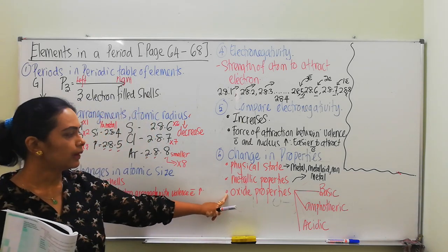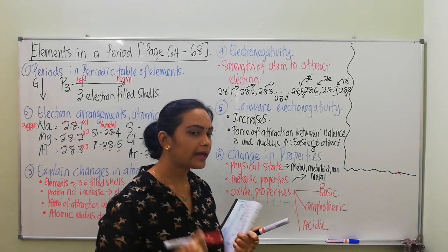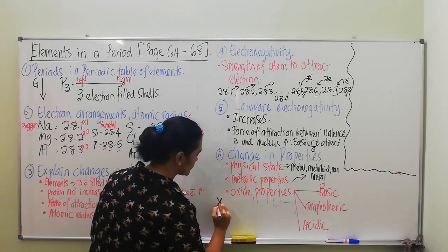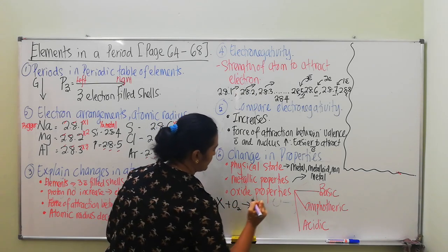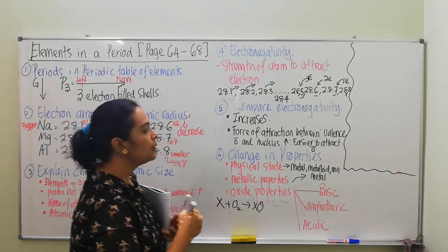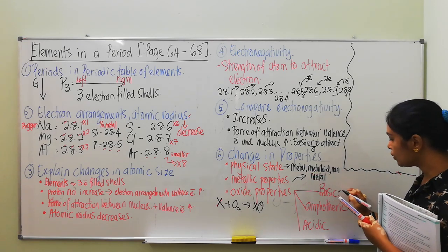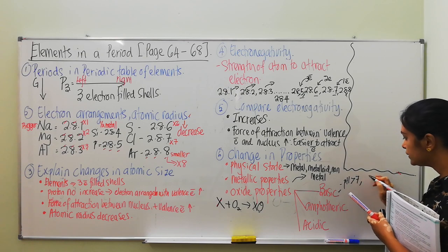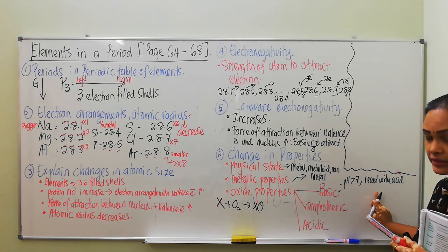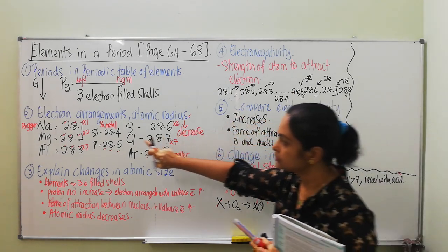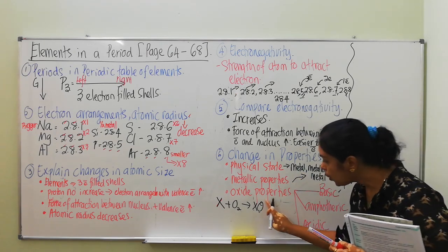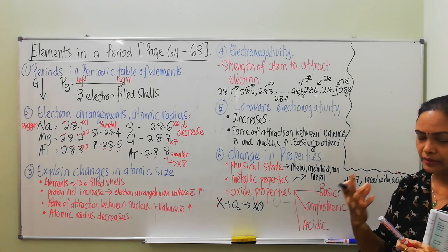Now teacher is very interested to discuss oxide properties. Oxide properties: when you react metals with oxygen, they turn into an oxide. For example, when you burn a metal with oxygen it will turn into a metal oxide. Going across period 3, those who are metals will produce basic oxide. Basic means pH more than 7 and they react with acid. Sodium reacts with oxygen to produce sodium oxide. Since sodium is a metal, sodium oxide is said to be basic — it has base properties, something like alkaline, with pH more than 7 and can react with acid.